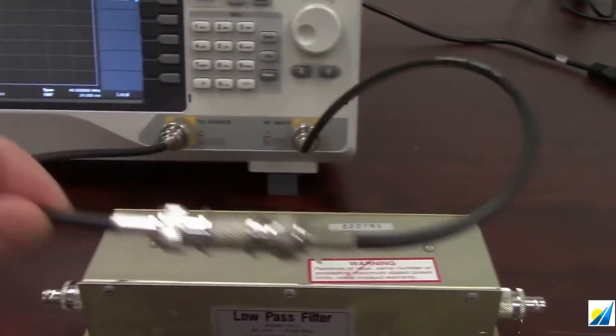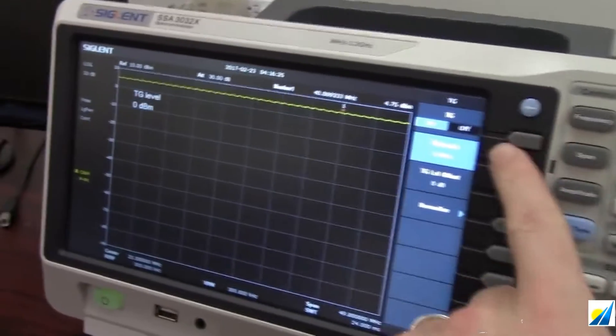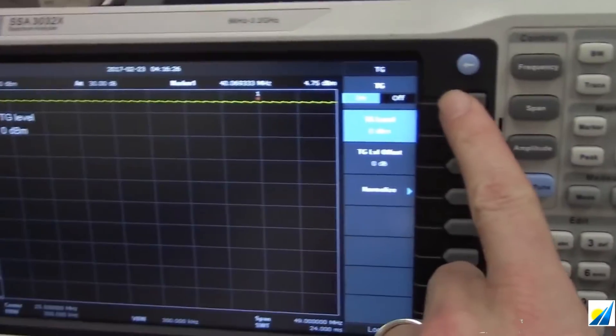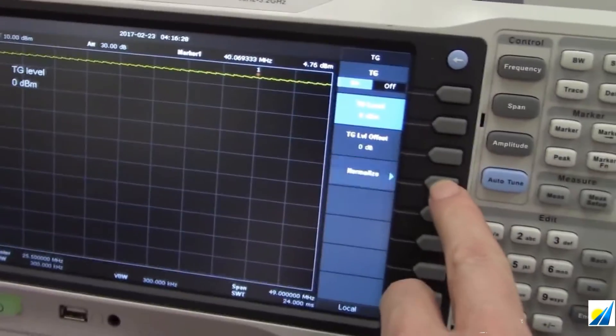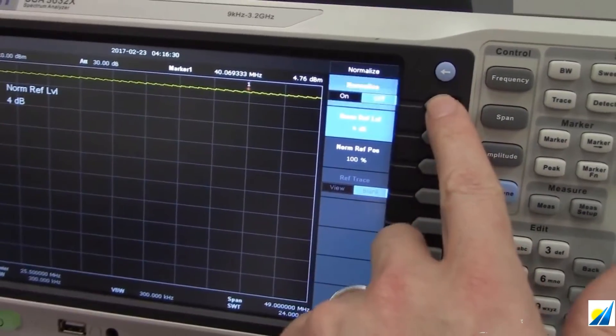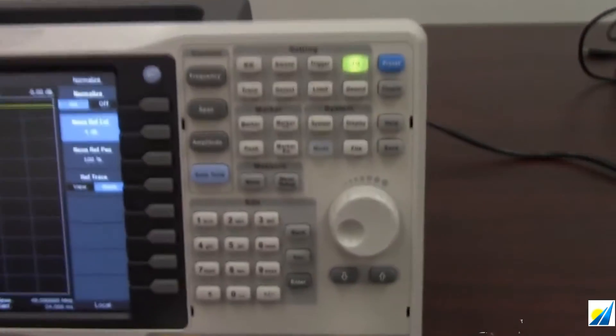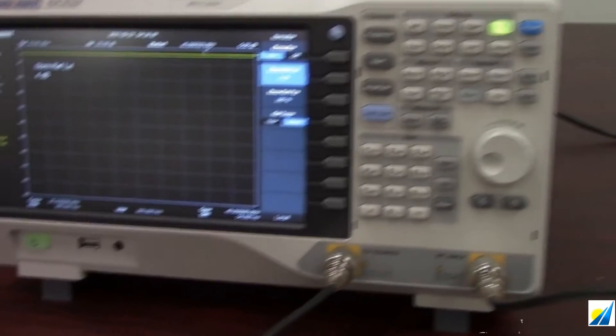Okay, now we're back. I have put the barrel adapter in and now I'm going to turn on the tracking generator. So we've got the tracking generator on. And now I'm going to press normalize and turn the normalize trace on. And now you'll see that the line has gone flat and we are at 0 dB. And now I can take out the barrel.